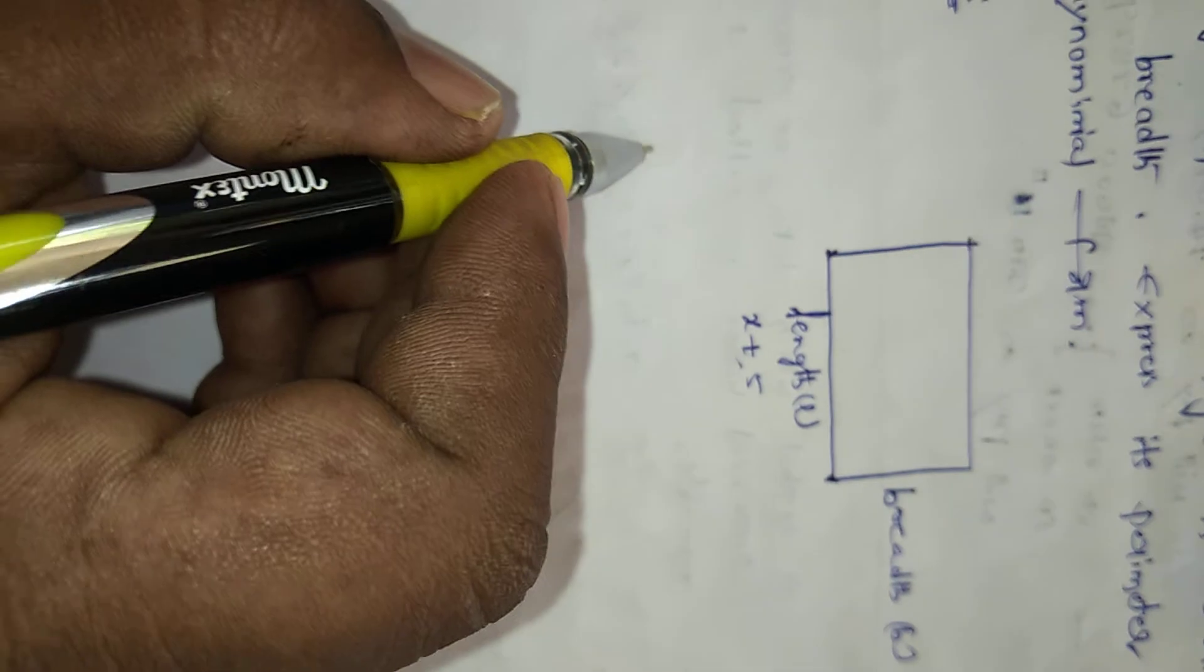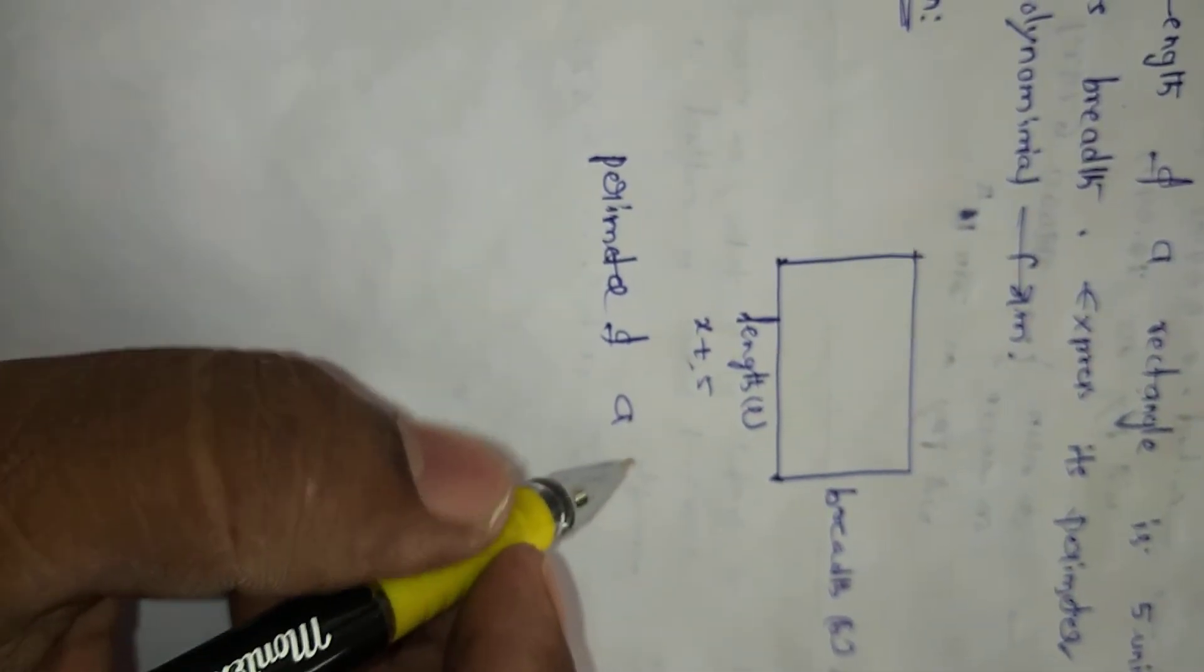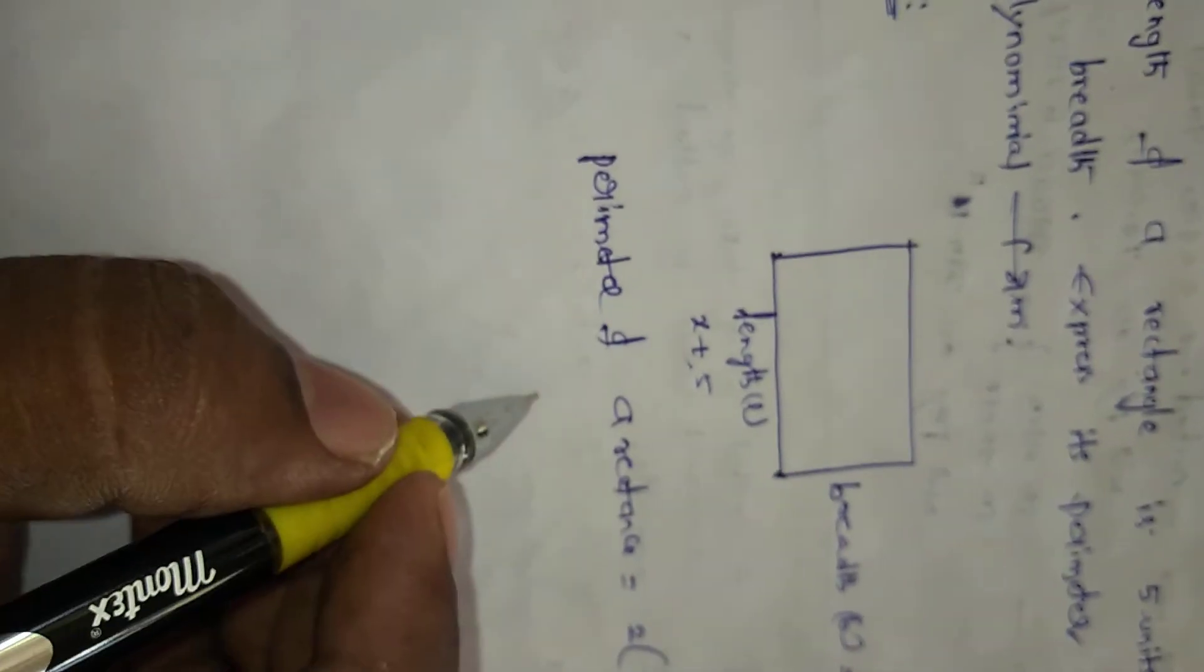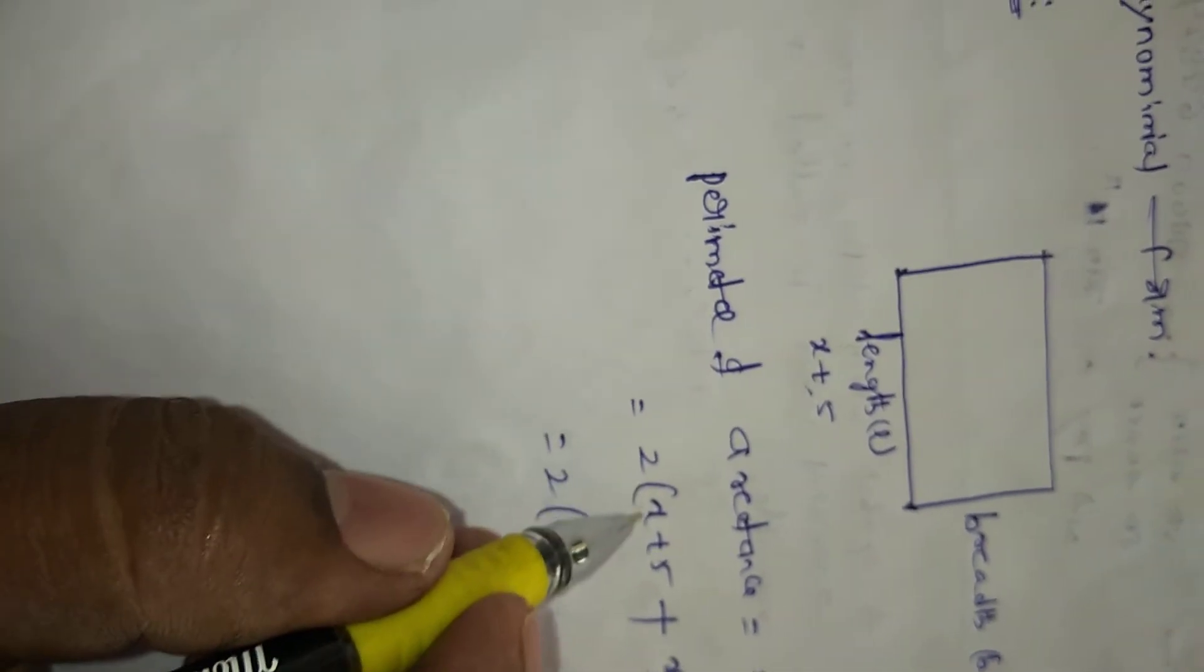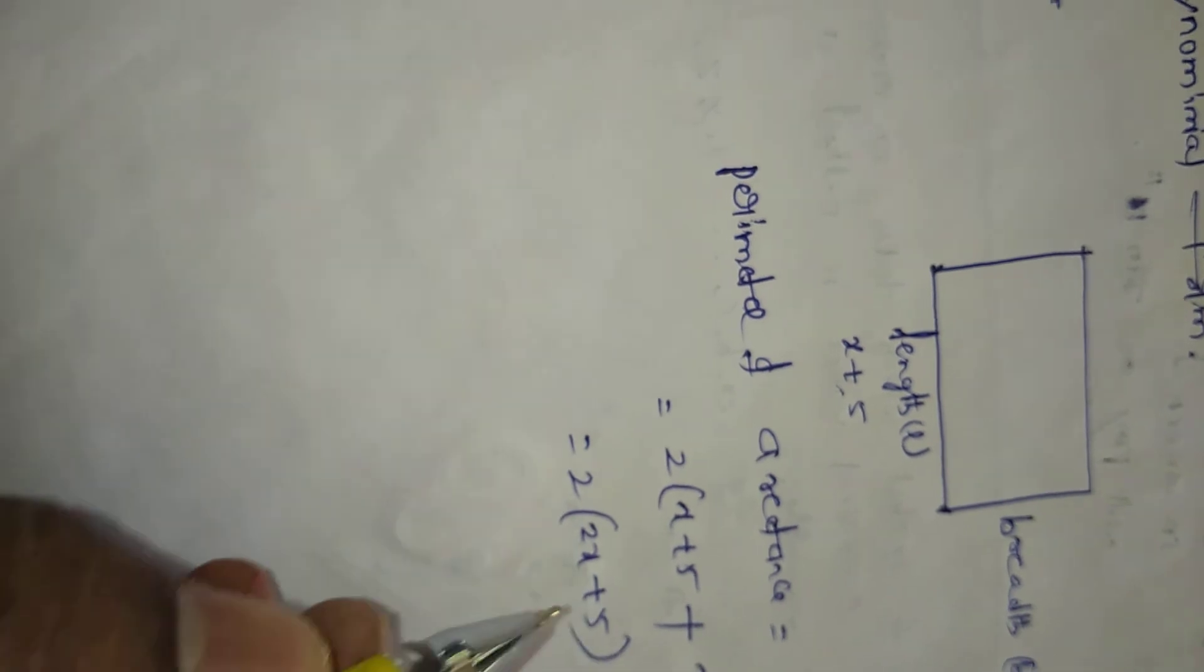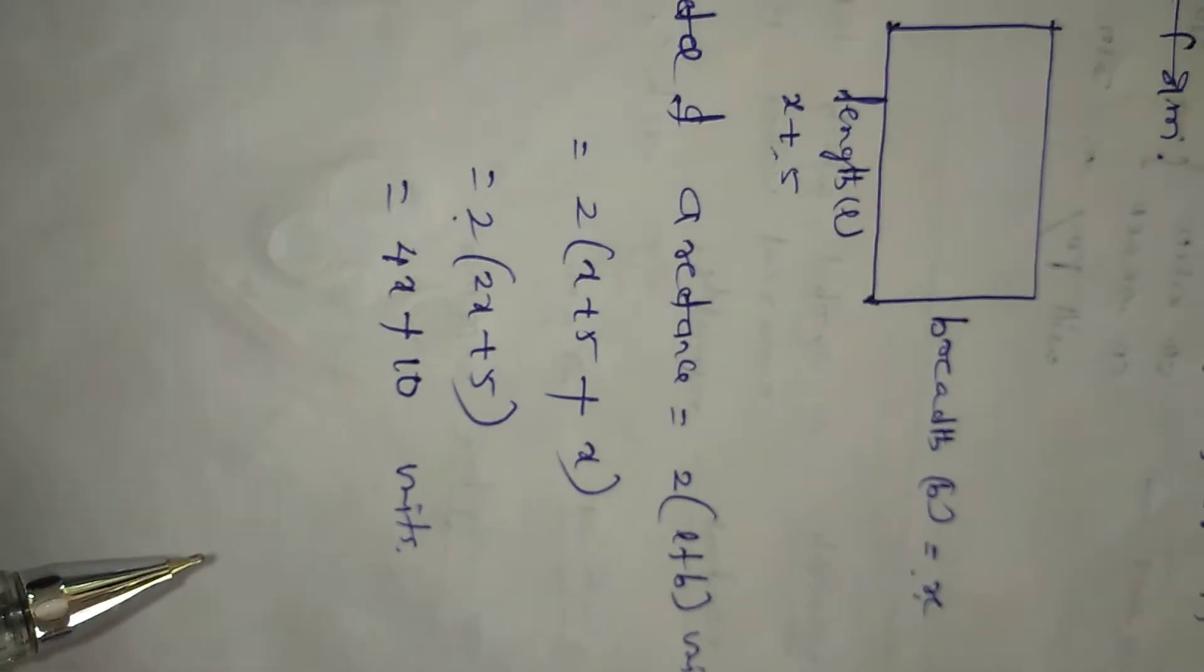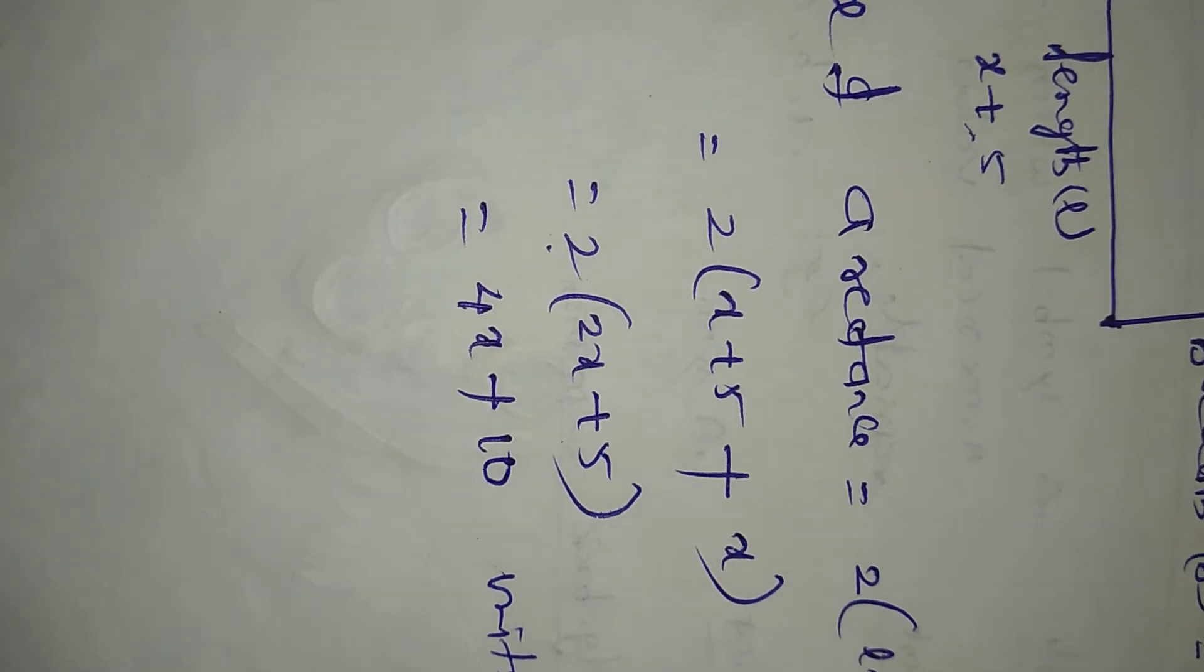Perimeter of a rectangle we can express in the polynomial form: 2 into L plus B units, which equals 2 into length, we got x plus 5, plus B we got x. 2 into x plus x, 2x plus 5. 2 into 2, 4, 5 times 10 units. This is the perimeter of a rectangle given data.